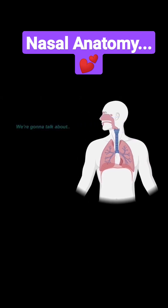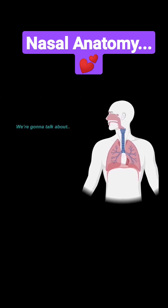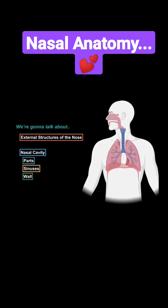So in this video, we will start by covering the external structures of the nose, including its cartilage. Then we will split open the head and try to cover the anatomy of the nasal cavity, where we will be talking about the parts of the nasal cavity, the sinuses, and then talk about the layers of the nasal cavity wall. So let's now start with the external nose.